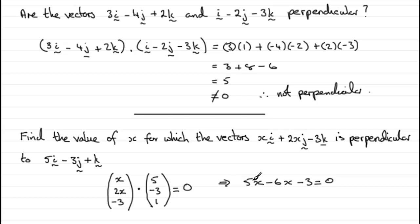So 5x minus 6x gives us minus x minus the 3 equals 0. And if we add x to both sides, we end up with x equaling minus 3.